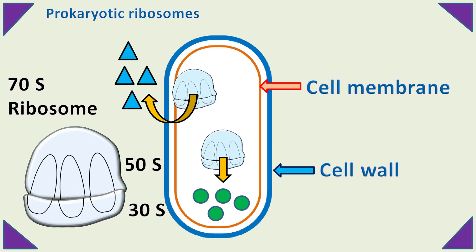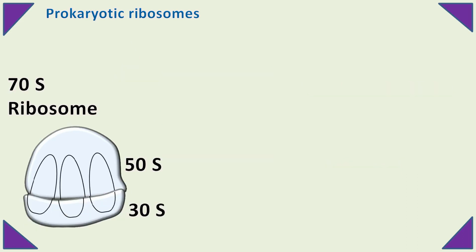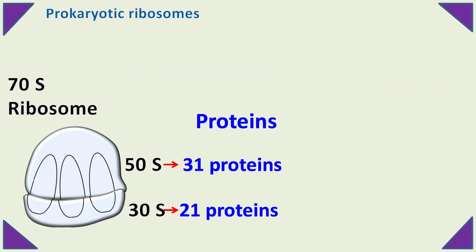The 50S subunit has about 31 ribosomal proteins, whereas the 30S subunit has about 21 ribosomal proteins.